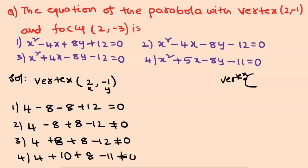The second, third, and fourth options — these parabolas do not have vertex at (2, -1). We check the first option; the vertex satisfies that equation. So we proceed with the first option as part of the parabola verification.